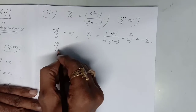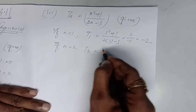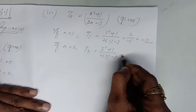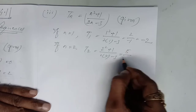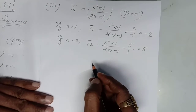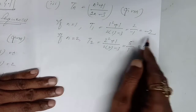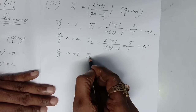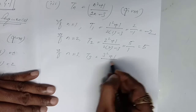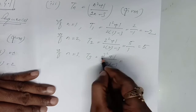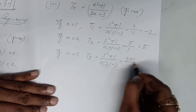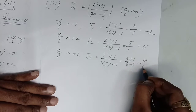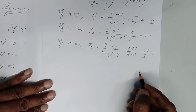Next, putting n equal to 2 for the second term: (2² + 1) / (2×2 − 3) = (4 + 1) / (4 − 3) = 5 / 1 = 5. Then if n equal to 3, third term: (3² + 1) / (2×3 − 3) = (9 + 1) / (6 − 3) = 10 / 3.